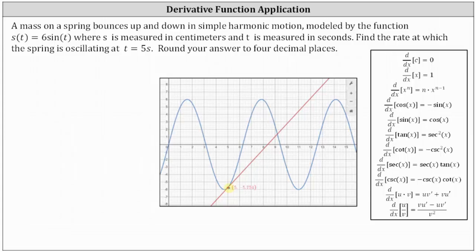In order to find the rate at which the spring is oscillating, we need to determine the velocity function and then evaluate the velocity function at t equals 5 seconds.